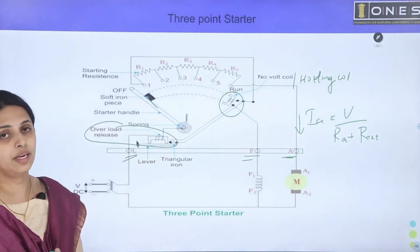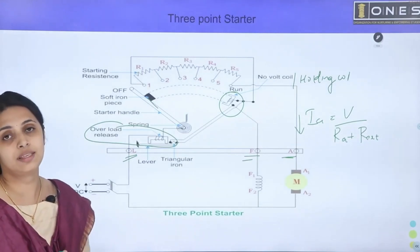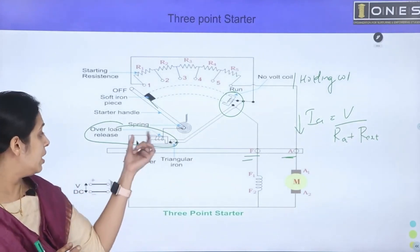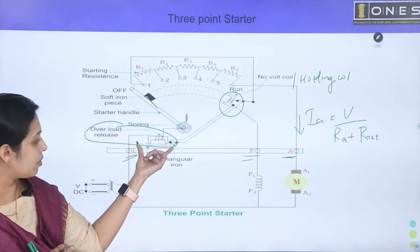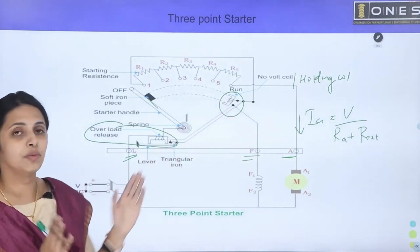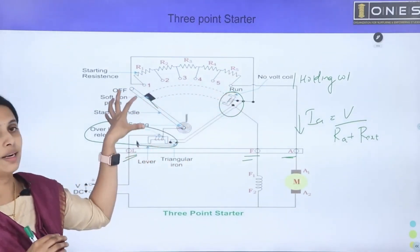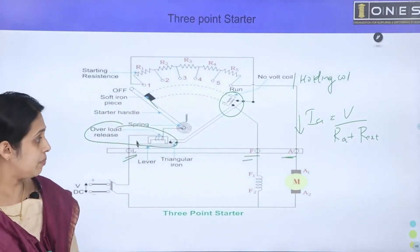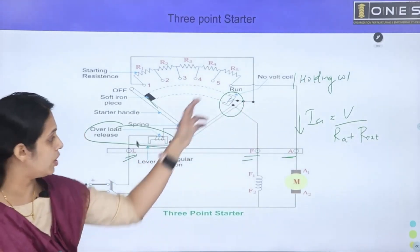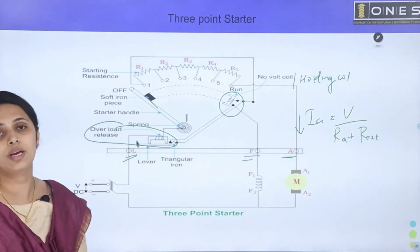The overload release protects against excessive current. If overload occurs, the release coil pulls the starter arm back to the initial position. The holding coil is connected in series with the field circuit. This is the basic operating principle of the 3-point starter.